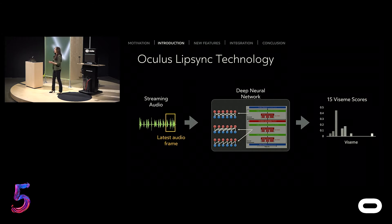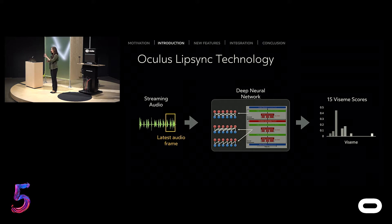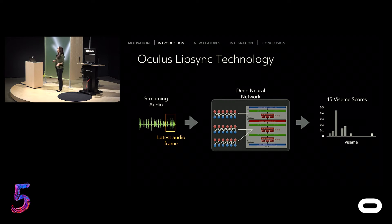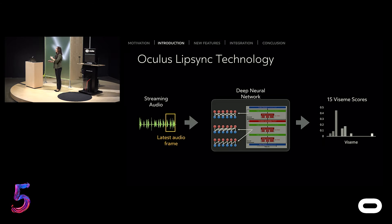Let's take a look at the underlying technology. Our technology takes in a continuous audio stream, uses the most recent audio frame, and extracts spectral signals out of it. We then feed them into a neural network, process them, and output 15 viseme values in floating point units. By combining those viseme output values, you can define how your avatar moves.